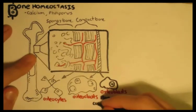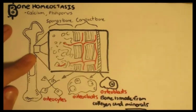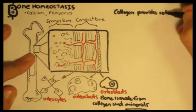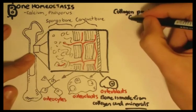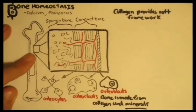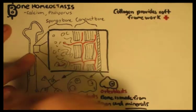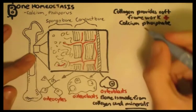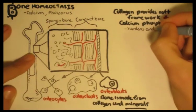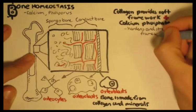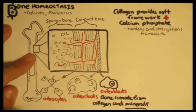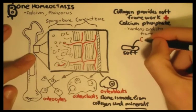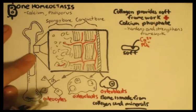Bone is made from collagen and minerals. Collagen provides the soft framework. And when you add the minerals, in particular calcium and phosphate, this enables a soft framework to strengthen and harden, becoming bone. So for example, here we have soft collagen. When we add calcium and phosphate, we get hard bone.